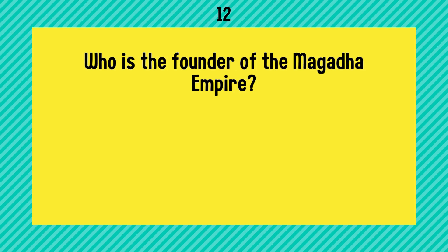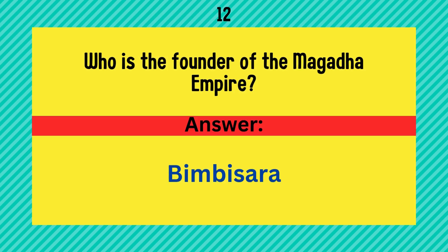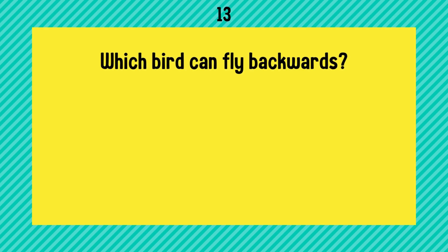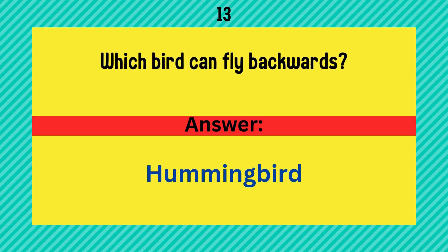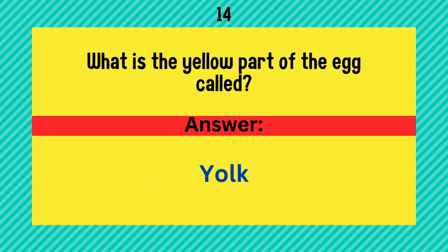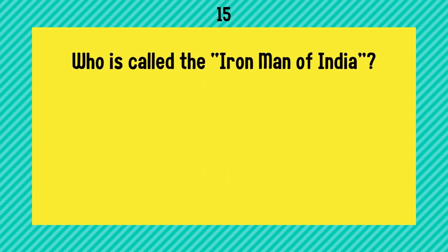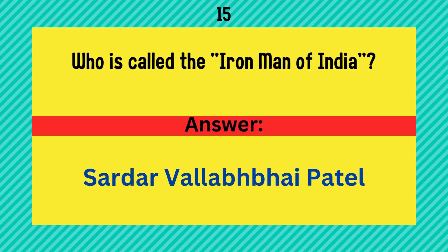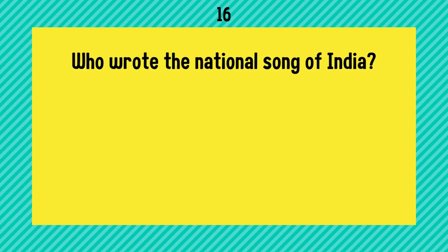Who is the founder of the Magadha empire? Answer is Bimbisara. Which bird can fly backwards? Answer is hummingbird. What is the yellow part of the egg called? Answer is yolk.